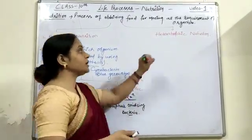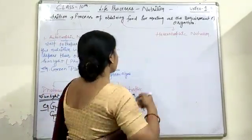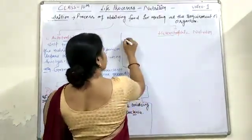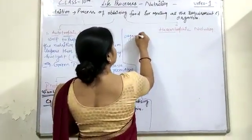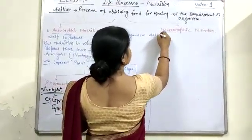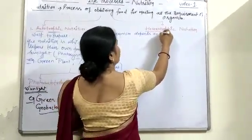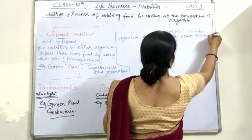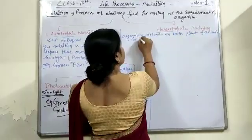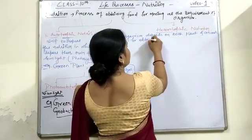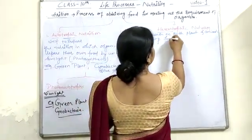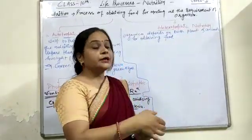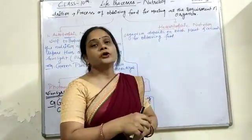Heterotrophic nutrition is the nutrition in which an organism depends on both plants and animals for obtaining food. When an organism takes food from both plants and animals, it is known as heterotrophic nutrition.